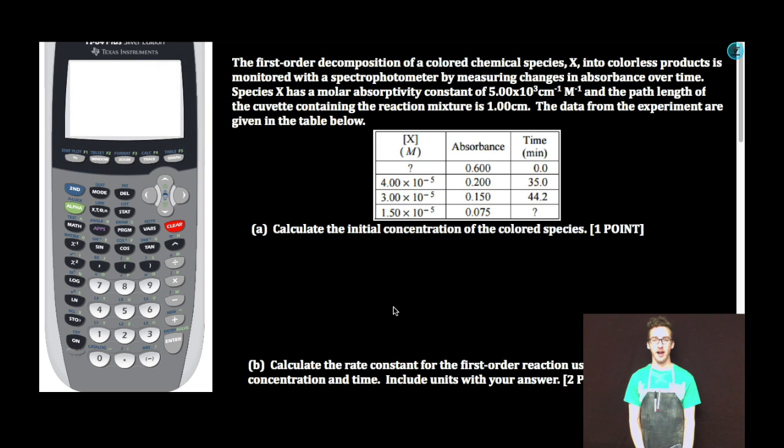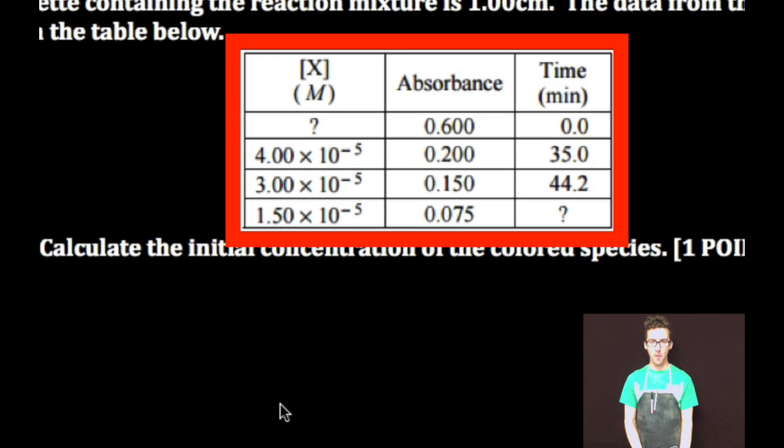Hey chem peeps, free response time. Stay seated. The first order decomposition of a colored chemical species X into colorless products is monitored with a spectrophotometer by measuring changes in absorbance over time. Species X has a molar absorptivity constant of 5.00 times 10^3 per centimeter per molarity and the path length of the cuvette containing the reaction mixture is 1.00 centimeters. The data from the experiment are given in the table below.